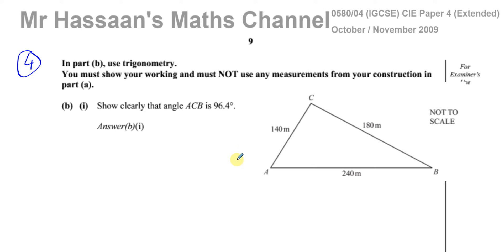Now in Part B it says here, show clearly the angle ACB is 96.4. So ACB is this angle over here. Let me just call it X for now. Now, when you have three sides of a triangle and it's not a right angle triangle, then we're going to use a cosine rule. And the cosine rule has a formula which is something that we must know. And it's basically A squared equals B squared plus C squared minus 2BC cosine A.